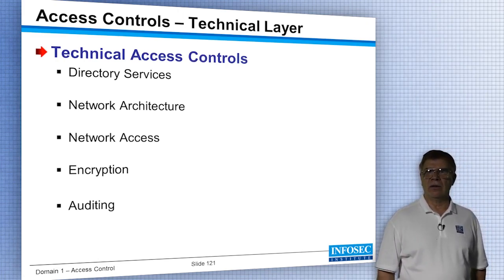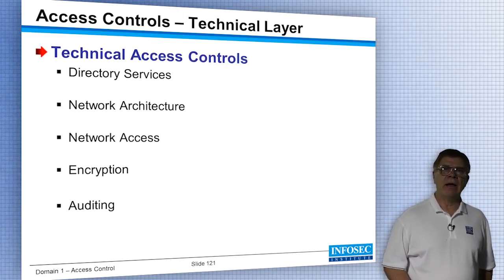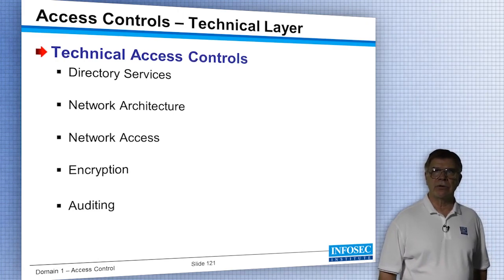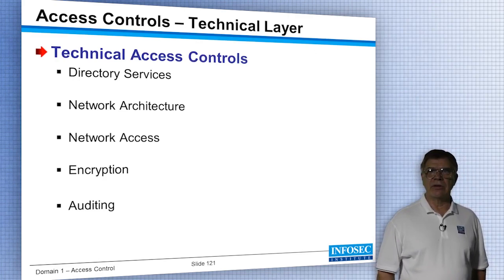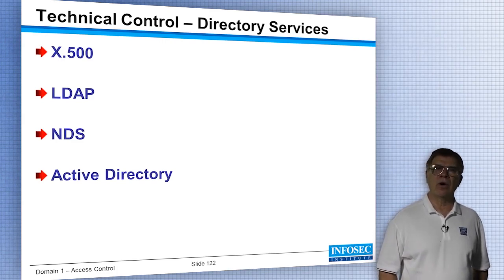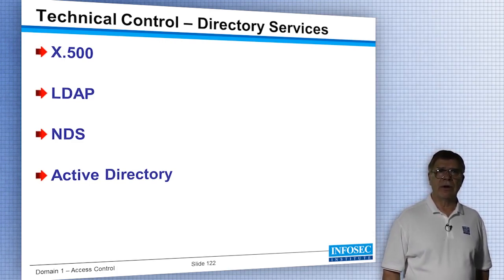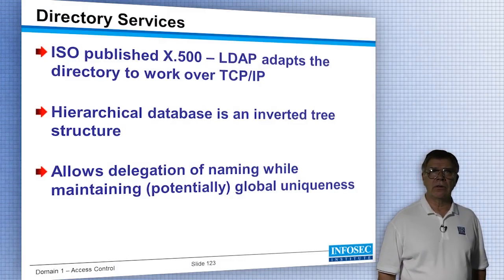Audit logs are technical controls because they track activity of users and systems. It's not preventative — it can't prevent someone from accessing data — but it helps an administrator understand how access took place so they can make changes in the future. Directory services types include X.500, LDAP-compatible, network directory services, and Active Directory — all are technical controls.